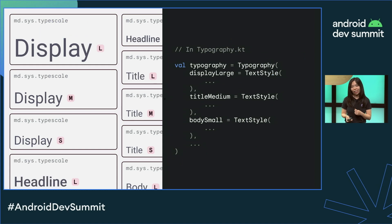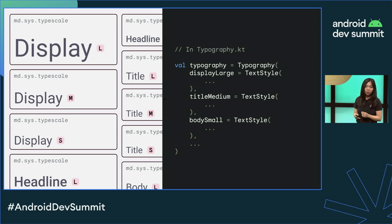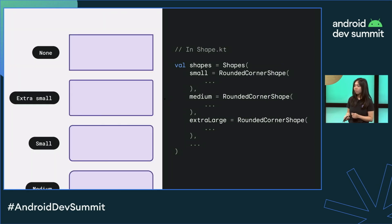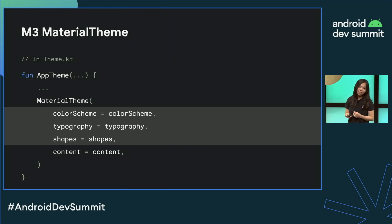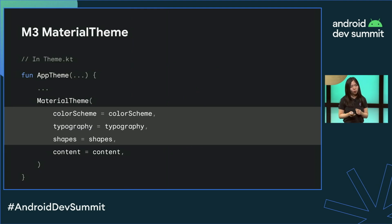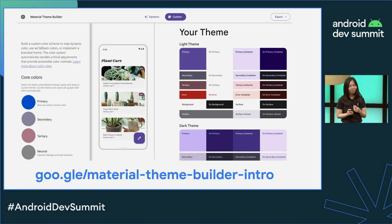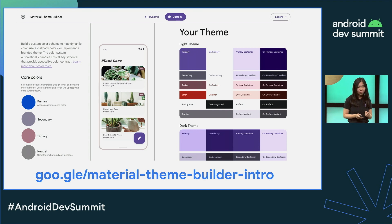The type scale contains text styles with simplified naming based on use and size. The shape scale defines the style of component corners, offering a range of roundness from square to fully circular. You can connect these in the Material Theme composable to brand your app. We recommend using the Material Theme Builder tool to generate color schemes derived from your brand's colors and export a Compose theme.